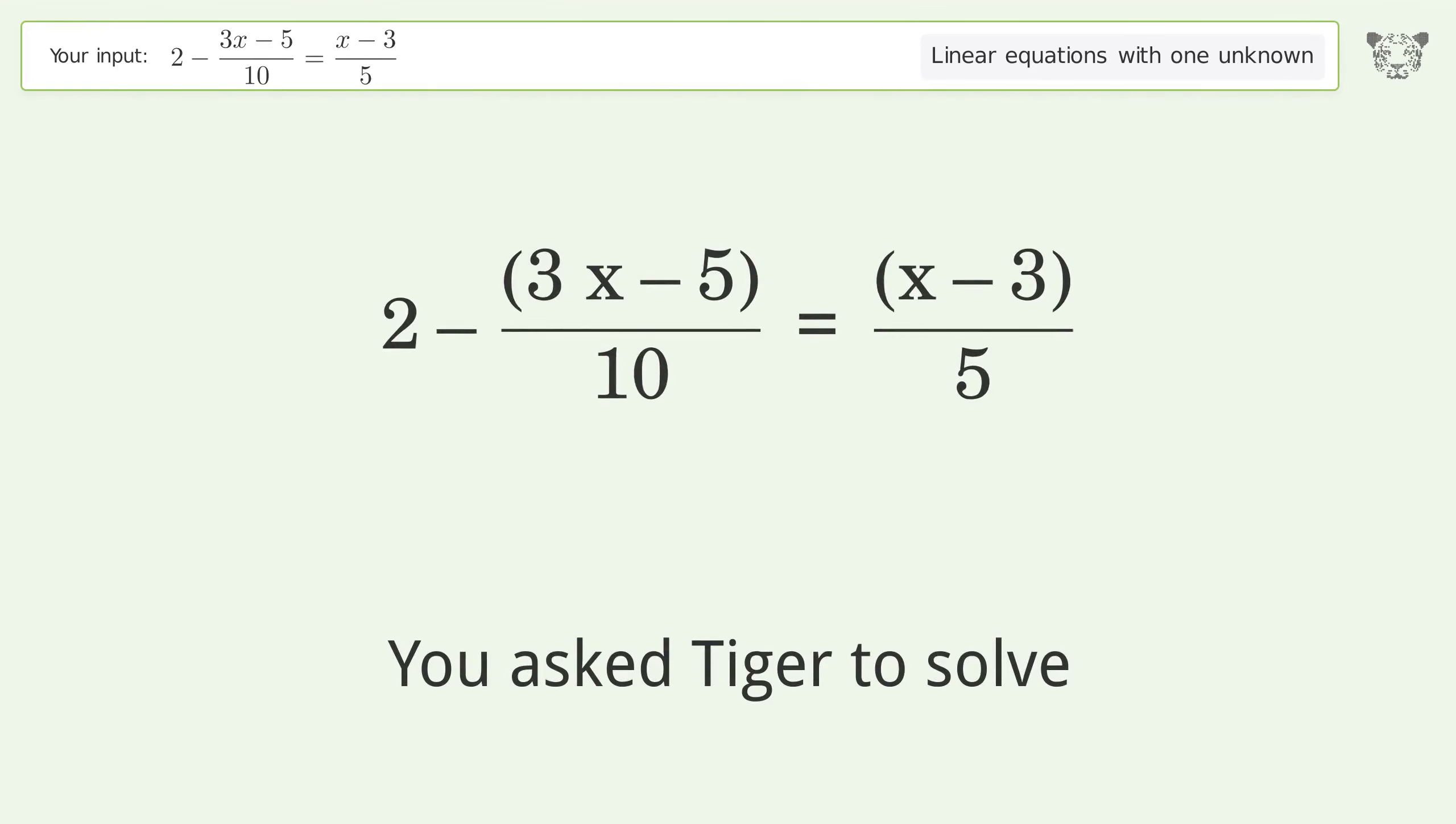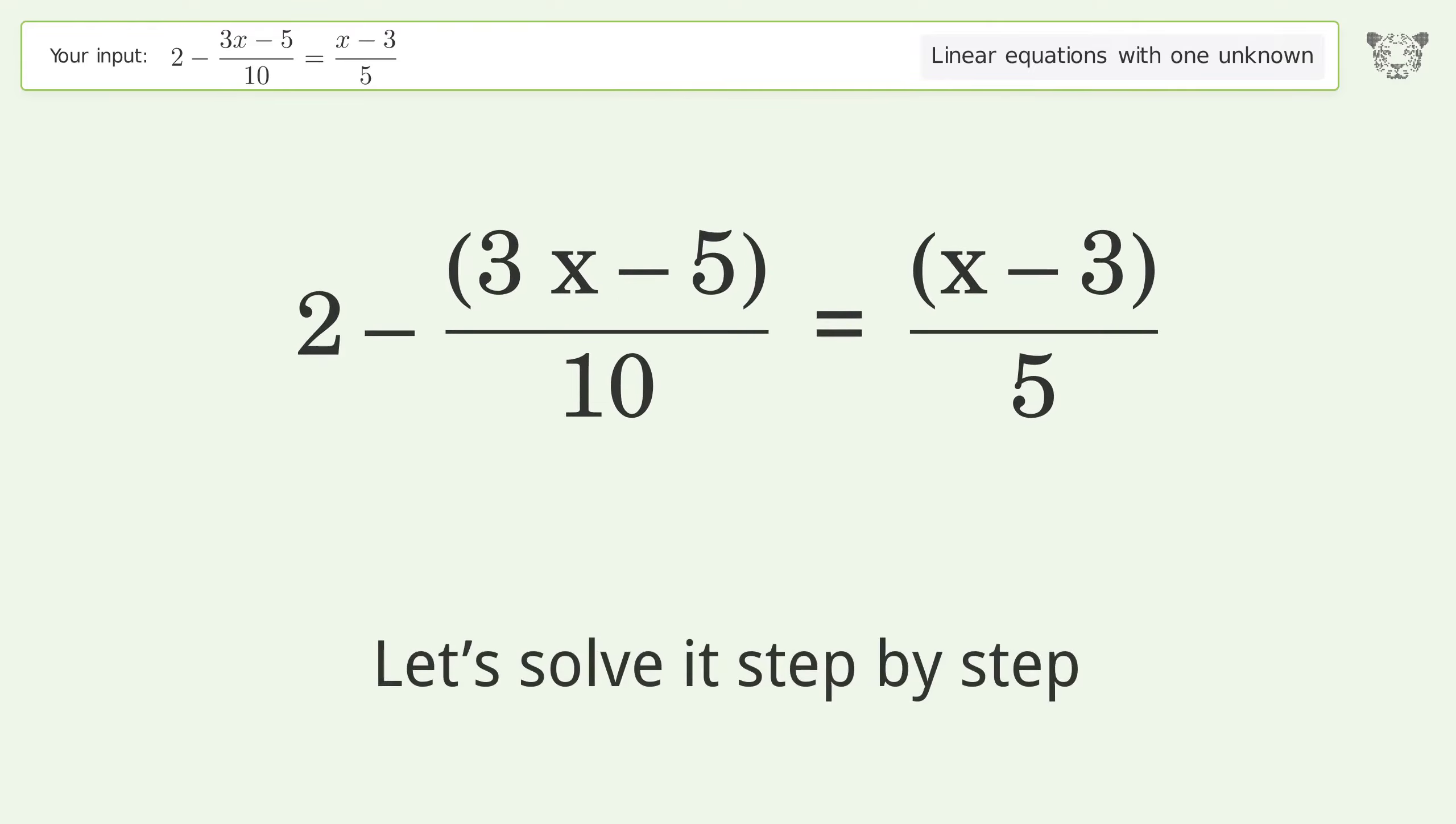You asked Tiger to solve this. Deals with linear equations with one unknown. The final result is x equals 31 over 5. Let's solve it step by step.